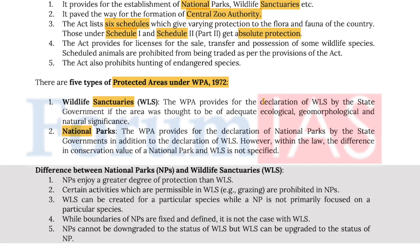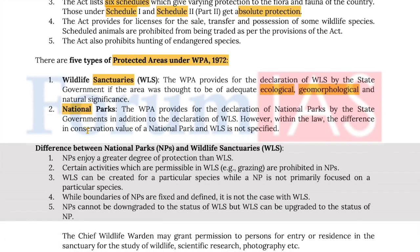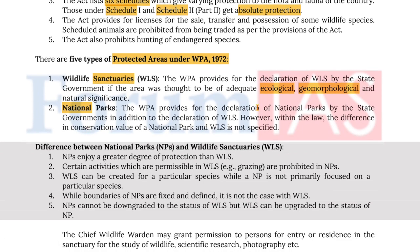Wildlife sanctuaries are declared by the state governments if the area is thought to be of adequate ecological, geomorphological and natural significance. National parks are declared again by the state government in addition to the declaration of wildlife sanctuaries. However, within the law, the difference in conservation value of a national park and a wildlife sanctuary is not specified.